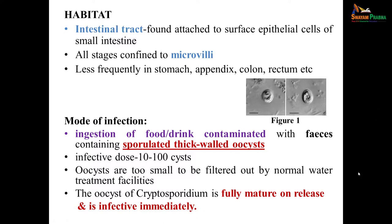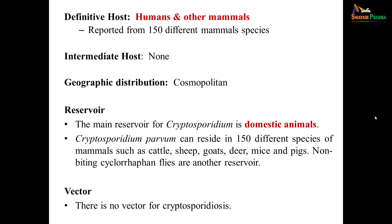Mode of infection is by ingestion of food or drinks contaminated with feces containing sporulated thick-walled oocysts. The infective dose is 10 to 100 oocysts. They are too small to be filtered by normal filtration techniques, and the oocysts of Cryptosporidium are fully mature on release and infective immediately. Definitive hosts are humans and other mammals, reported from 150 different mammal species. There is no intermediate host and distribution is cosmopolitan. The main reservoir is domestic animals. Non-biting cyclophane flies are another reservoir to keep in mind.